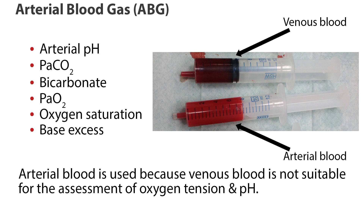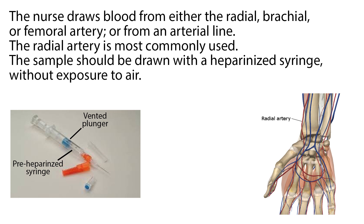Arterial blood is used because venous blood is not suitable for the assessment of oxygen tension and pH. The nurse draws blood from either the radial, brachial, or femoral artery, or from an arterial line. The radial artery is most commonly used because it is accessible, easily positioned, and more comfortable for the patient. The sample should be drawn with a heparinized syringe without exposure to air, then placed on ice — which slows the clotting of blood — and rushed to the lab for analysis.